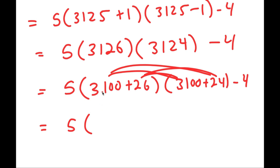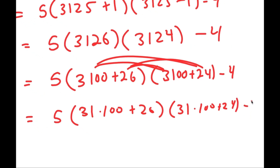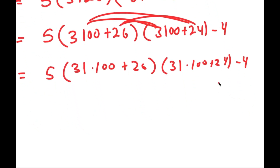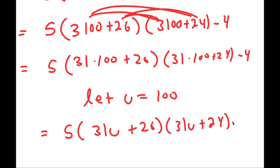And what I'm going to do again is rewrite 3100 as 31 times 100, so now it's even smaller. So I have this plus 26. And now I'm going to use u-substitution — I'm going to let the variable u equal 100. So now I get 5 times 31u plus 26, times 31u plus 24, minus 4.